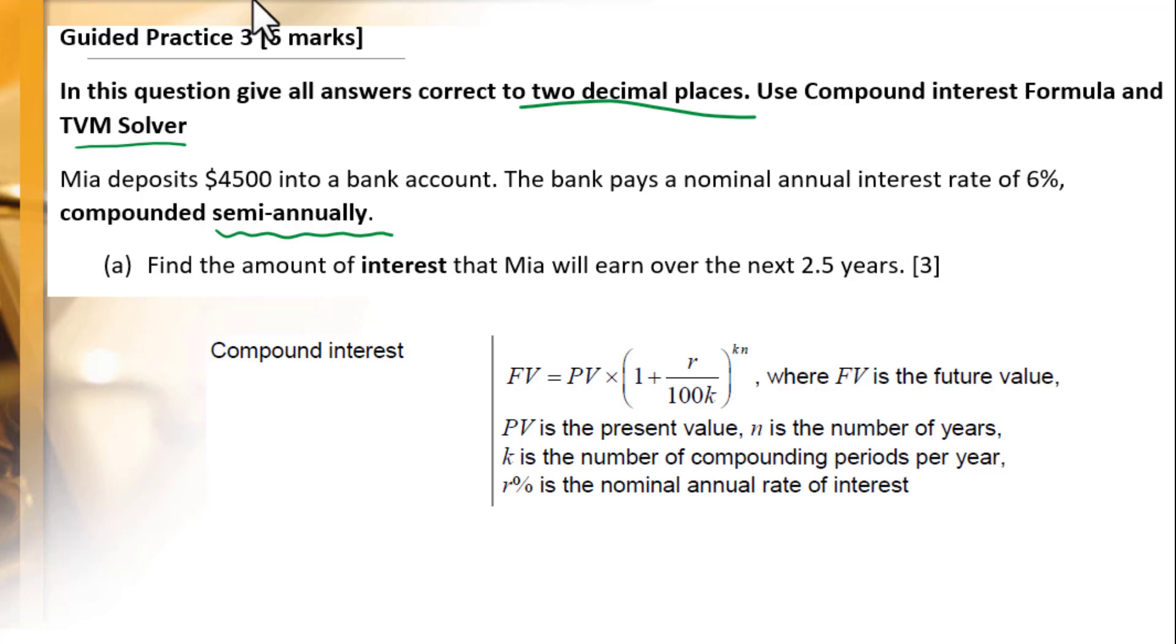First of all, let's use compound interest formula. The interest equals future value minus present value. We will use this formula to work out future value over the next 2.5 years. K is the number of compounding periods per year. Semi-annually means K equals 2. We are given present value. N is a number of years, 2.5. R percent is a nominal annual rate of interest. R equals 6.